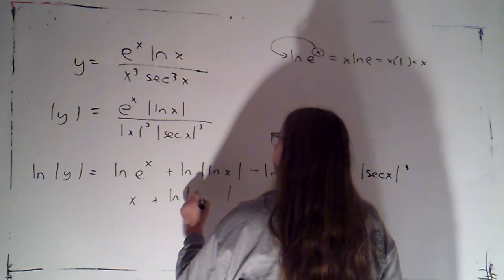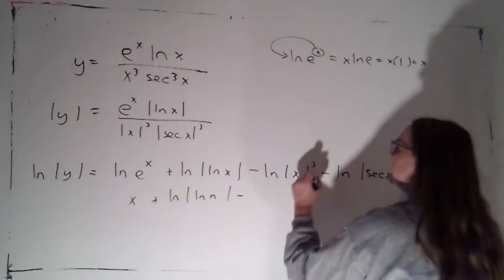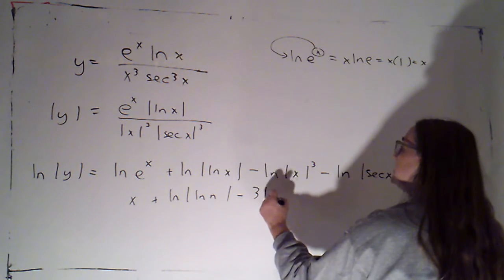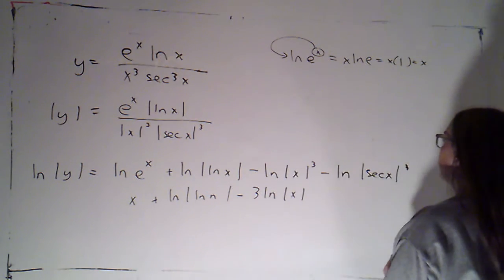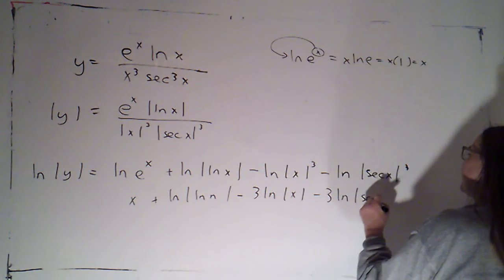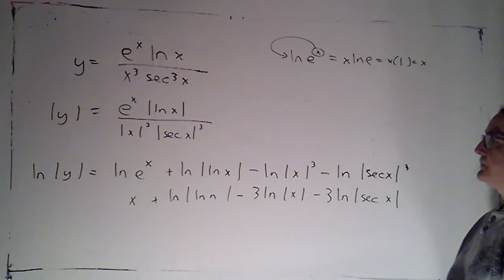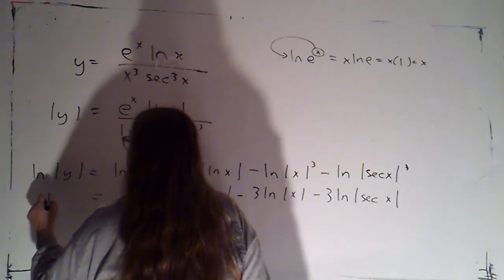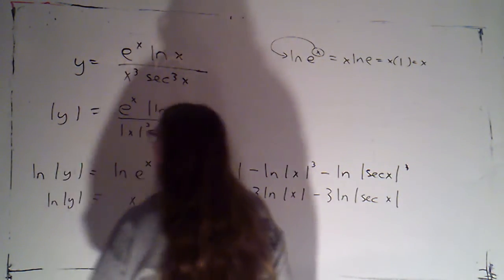plus ln absolute value of ln of x. Minus, I'll bring that power down, 3 ln of absolute value of x. Bring this next power down, minus 3 ln absolute value of secant of x. Okay. That was still the natural log of the absolute value of y.